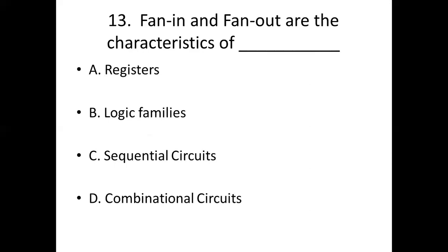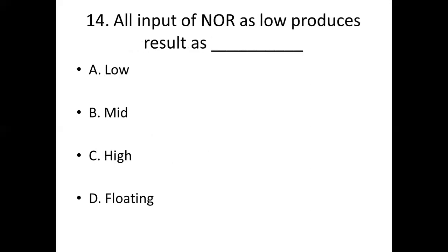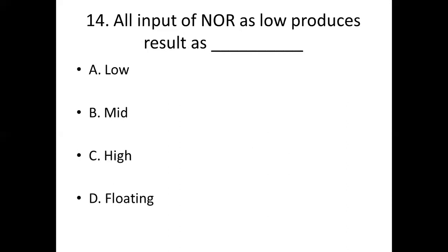14th bit: All inputs of NOR as low produce results as dash. Option A: low. Option B: mid. Option C: high. Option D: floating. Answer: Option C, high.